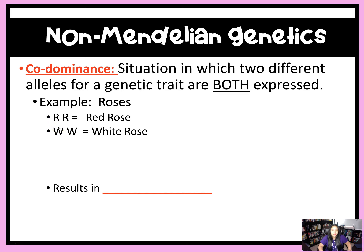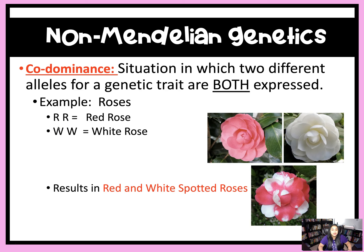Now I want you to think — if they are both codominant and both are expressed, what do you think a red rose and a white rose mated will look like? That's right, you will get red and white spotted roses. So as you can see, the red and the white combine to give you red and white spotted.